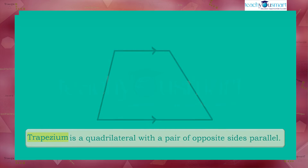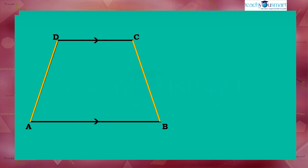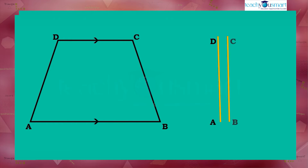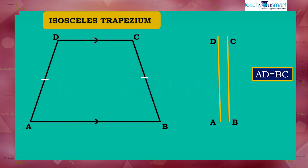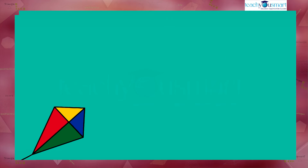Now let's see a special type of trapezium. Here you can see trapezium ABCD. Check the length of sides AD and BC — we find that the sides are the same. So we call it an isosceles trapezium. That is, if the non-parallel sides of a trapezium are of equal length, then it is an isosceles trapezium. Now let's learn another kind of quadrilateral — the kite.